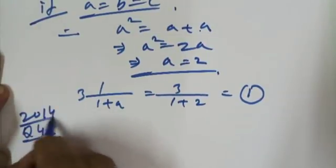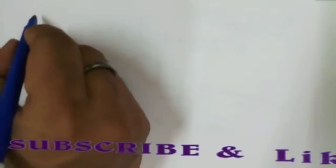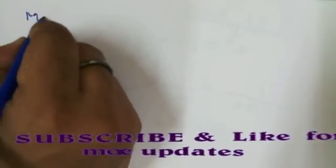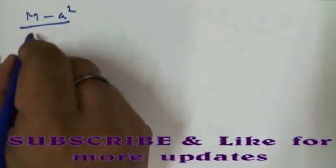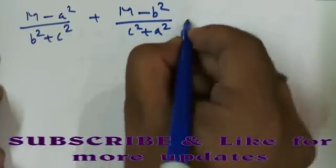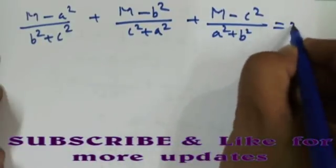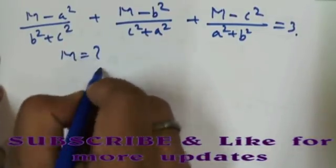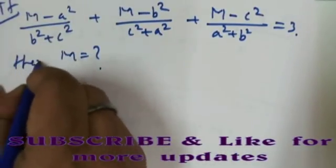Question number 4, from 2014. The question is: (M−A²)/(B²+C²) + (M−B²)/(C²+A²) + (M−C²)/(A²+B²) = 3. What is the value of M?